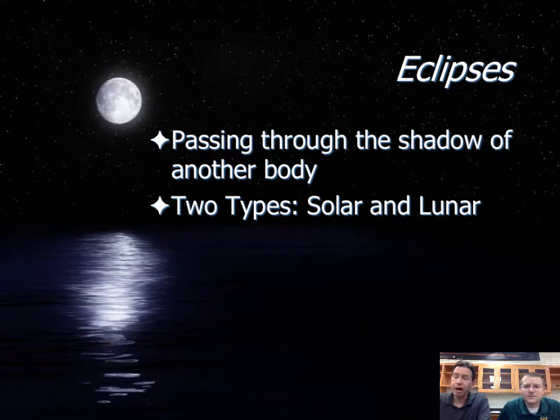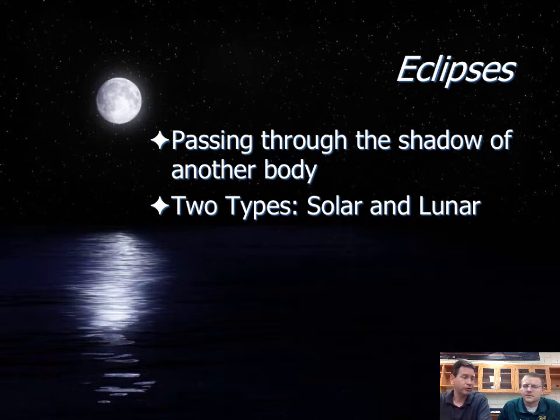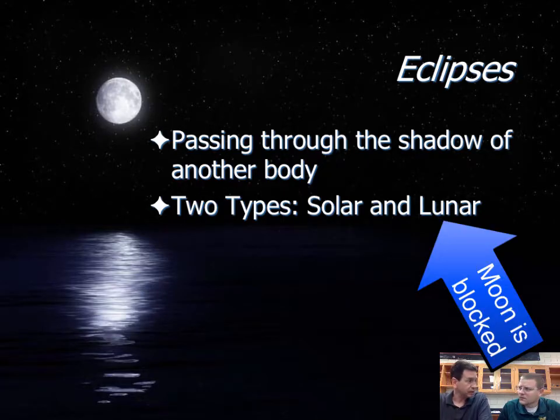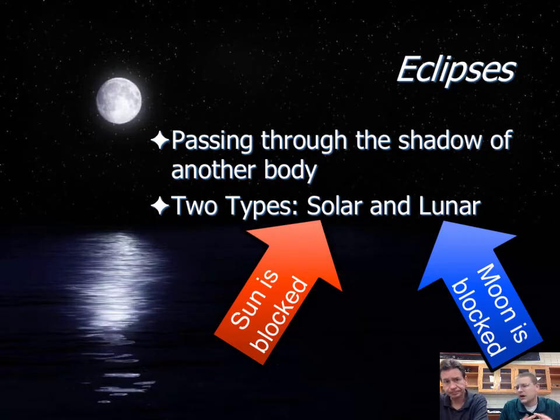Eclipses are when a body in space passes through the shadow of another body. We've got two different types that we can see here on Earth: solar eclipse and lunar eclipse. People usually get confused about which one is happening. What's an easy way we can remember that? Well, lunar means moon and solar means sun, so if it's a lunar eclipse, the moon is being eclipsed and if it's a solar eclipse, the sun is being eclipsed. Whatever the name is of the eclipse is what body is being blocked.